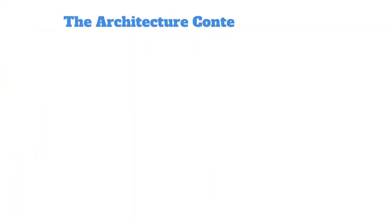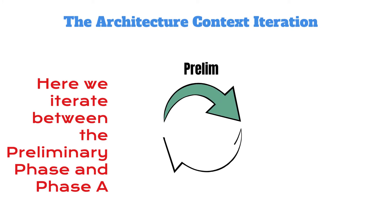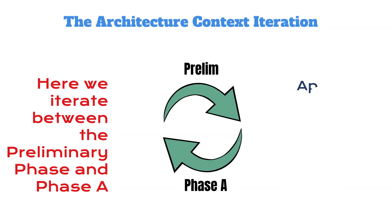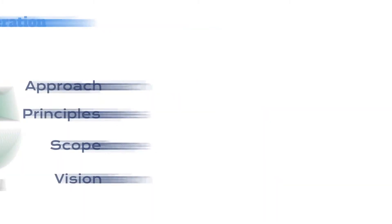The architecture context iteration: here we iterate between the preliminary phase and phase A. We refine the approach to our architecture development — the principles, the scope, the vision, and all those preliminary activities that border between the preliminary phase and phase A, the architecture vision phase.